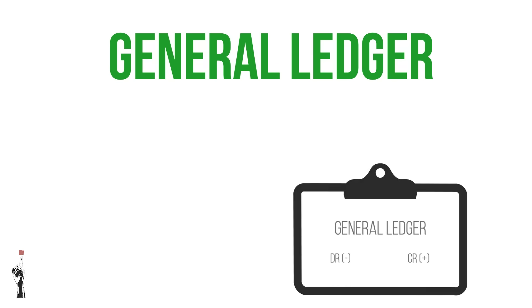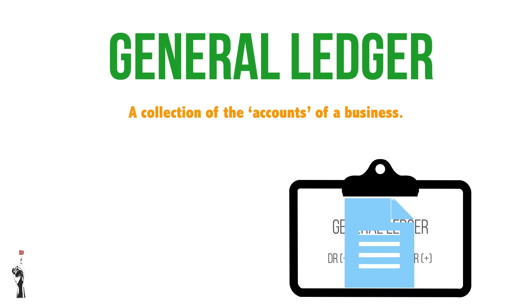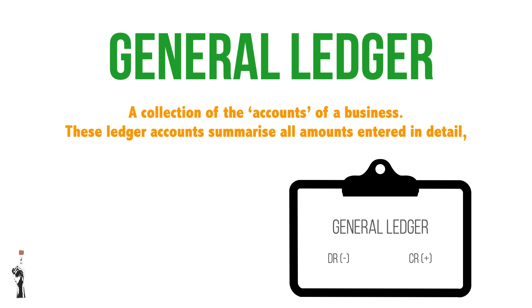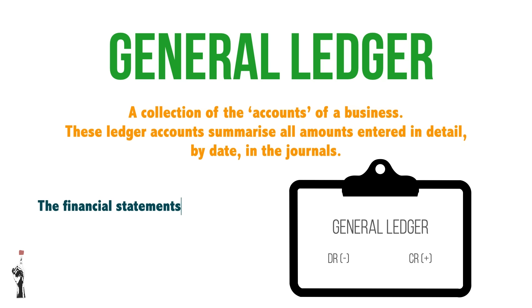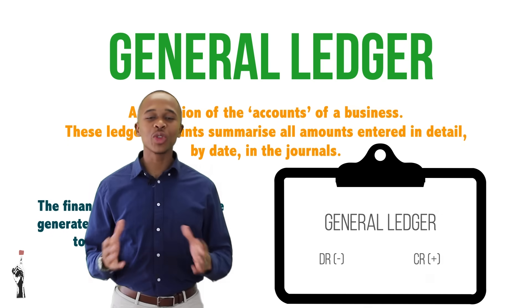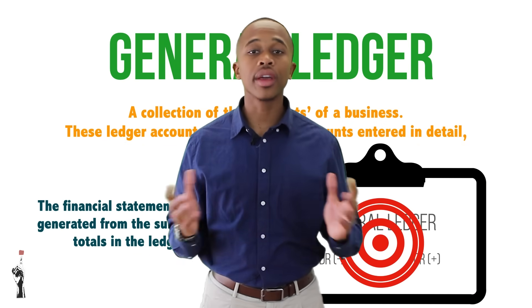Let's start with the definition of a general ledger. The general ledger is a collection of the accounts of a business. These ledger accounts summarize all amounts entered in detail by date in the journals. The financial statements will be generated from the summarized totals in the ledger. It is the central focus of any bookkeeping system.